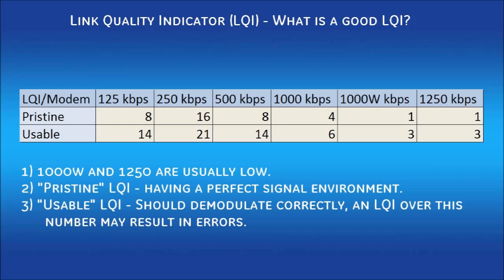For the remaining modems, 'pristine' means in an absolutely perfect signal environment the best LQI will be less than or equal to the number in the table. 'Usable' means the signal quality is good and the radio should be able to demodulate correctly. However, if LQI averages are approaching this limit, then one could expect there to be errors. Ideally, average LQI should fall somewhere between the two values shown for each modem.